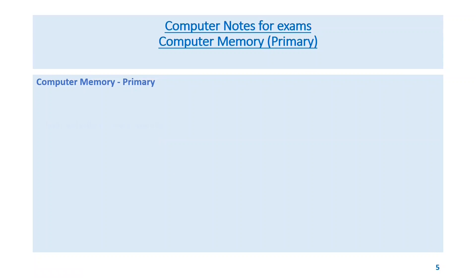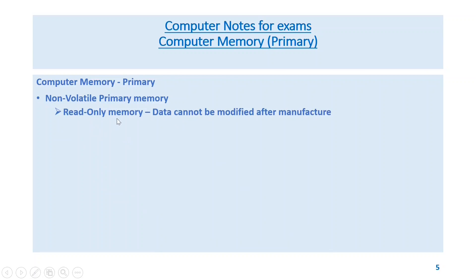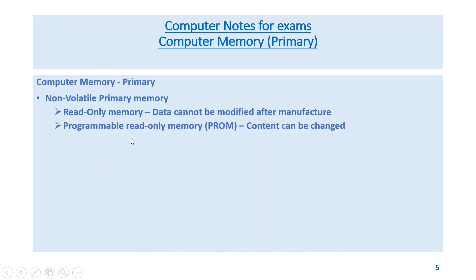Computer memory can be primary, secondary, and cache memory. Primary non-volatile memory includes read-only memory (ROM) — data cannot be modified after manufacture. Programmable read-only memory (PROM) content cannot be changed.